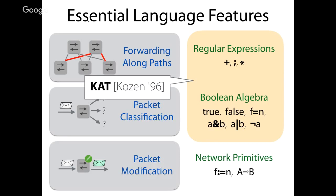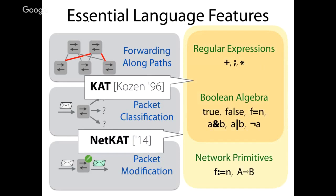We add network primitives: a modification operator that rewrites field f of a packet to a new value n, and a link operator 'a link b' that forwards packets located at switch a across the link to switch b. Mathematically, the link modifies the position of the packet from a to b — you can think of the location of a packet as just another logical field. NetKAT is this combination of Kleene Algebra with Tests with these extra network primitives, which is where the name comes from.